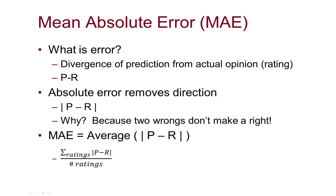Mean absolute error is probably the simplest measure. It defines error as the divergence of prediction from actual rating — the prediction minus the rating. We take the absolute value to get rid of the sign, because two wrongs don't make a right. We don't want to say we have a very accurate recommender because half the time it's two stars high and half the time it's two stars low. We sum up the absolute value of prediction minus rating for every rating and divide by the total number of ratings.